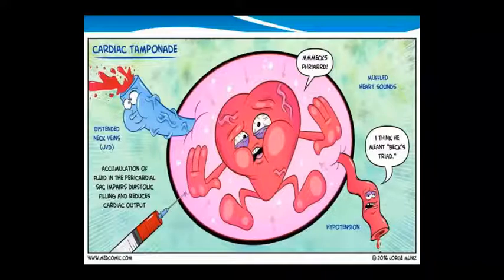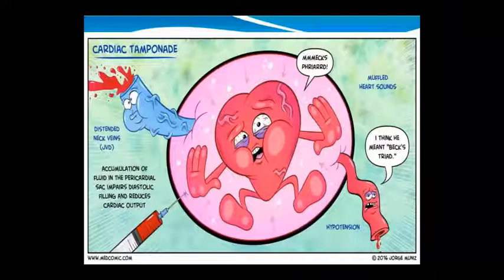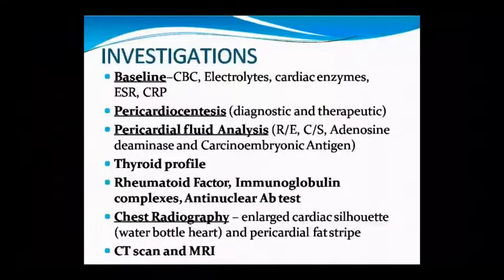Cardiac tamponade is shown in the diagram. As fluid accumulates in the pericardial sac, diastolic filling is impaired and cardiac output is reduced. The fluid can be acute or chronic in onset. Signs include hypotension and distended jugular neck veins — JVD (jugular venous distension).